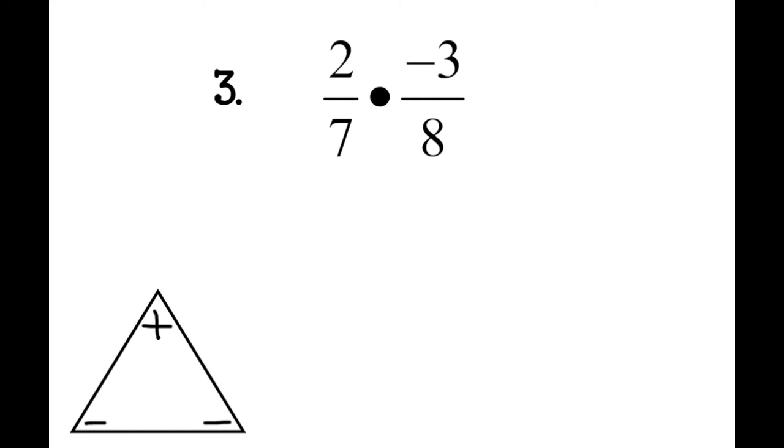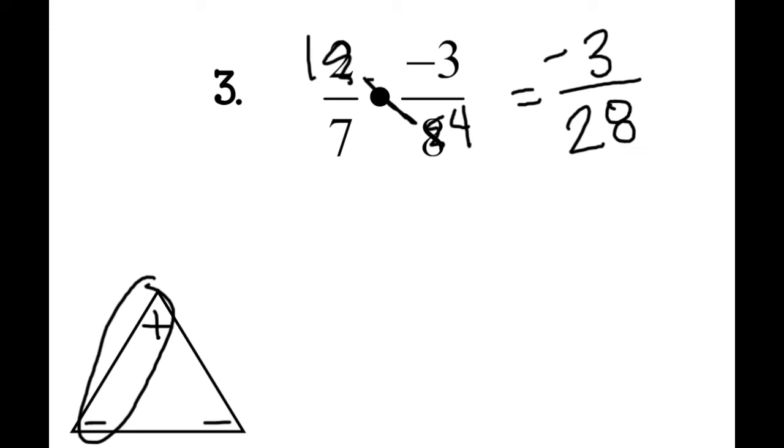Number 3: I have 2 sevenths times negative 3 eighths. The first thing I'm going to do is cross-reduce if I can, and 2 goes into 8 four times, so this becomes a 4 and this becomes a 1. Then I multiply straight across. 1 times negative 3, that's a positive and a negative, so I'm going to get a negative 3, and 7 times 4 is 28. Does 3 go into 28? It does not. This cannot be reduced at all. I circle it, and negative 3 28ths is my answer.